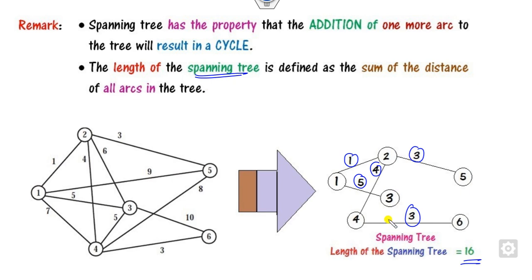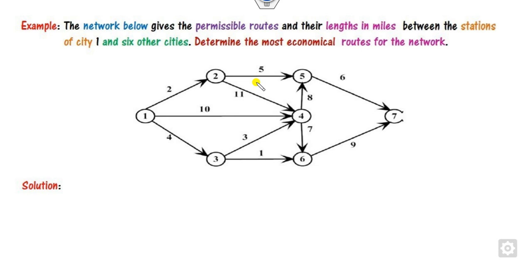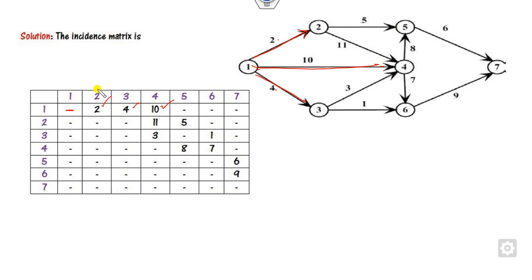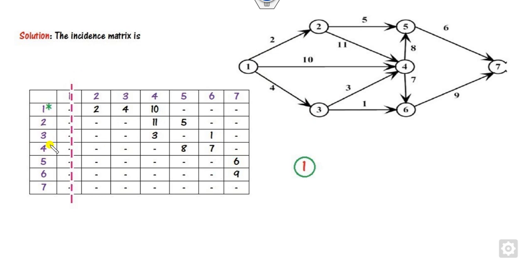Now, how do you find the minimal spanning tree? We will discuss 4 to 5 examples. Say you have to find the most economical route from node 1 to node 7, starting from 1 and reaching each node with minimal distance. First, construct the incidence matrix: with 7 nodes, write a 7×7 matrix and fill in the distances. For instance, 1-2 has distance 2, 1-3 has distance 4, 1-4 has distance 10, and so on. Start from node 1, put a star on row 1, and delete the corresponding column.